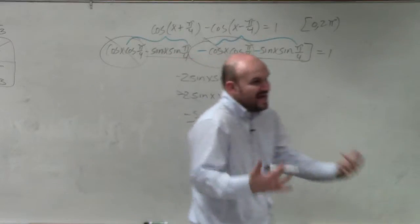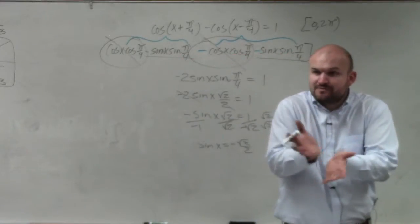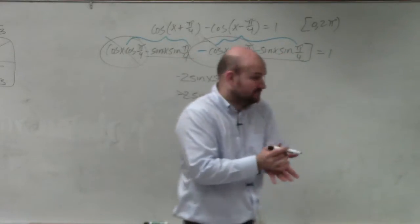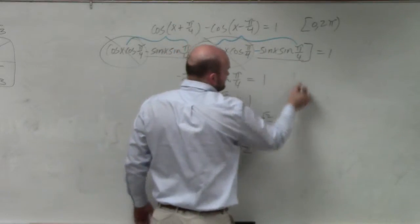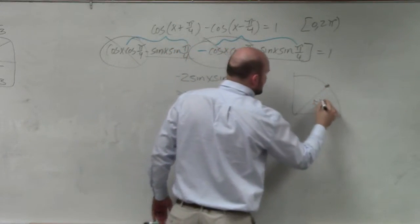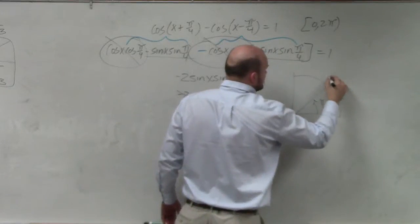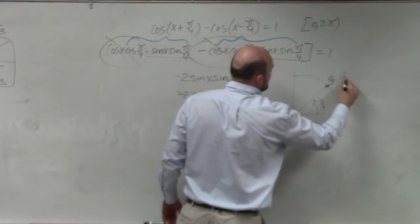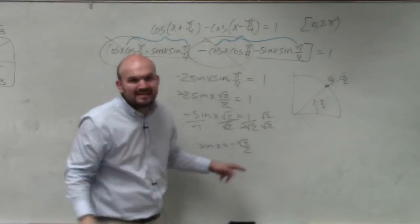But again, what are we looking for? We're looking for the x. What angle gives us negative square root of 2 over 2 within 0 to 2 pi? So we know that positive pi over 4 gives me square root of 2 over 2 comma square root of 2 over 2. But I need negative. When is sine negative?